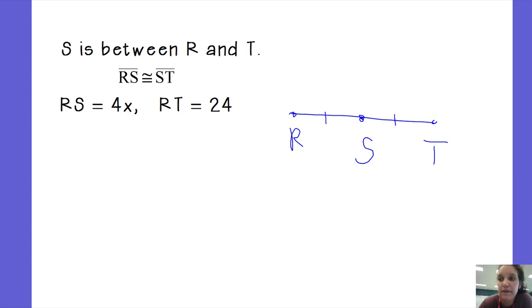So it tells me in the problem that RS is 4X and RT, the whole enchilada, is 24.